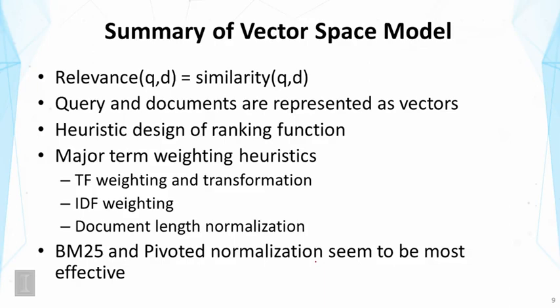I should note that I have put BM25 in the category of the vector space model, but in fact BM25 has been derived using probabilistic modeling. The reason I put it in the vector space model is first that the ranking function has a nice interpretation in the vector space model — it looks very much like a vector space model with a special weighting function. The second reason is that the original BM25 has a somewhat different form of IDF that doesn't work as well as the standard IDF shown here. So as an effective retrieval function, BM25 should probably use a heuristic modification of the IDF to make it look even more like a vector space model.